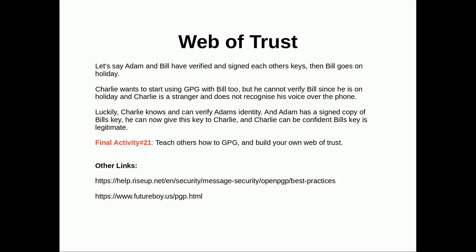Finally, the web of trust. Say you have Adam and Bill — they've verified and signed each other's keys. Bill goes on holiday, so only Adam is around. Charlie wants to start using GPG with Bill too, but can't because Bill is on holiday and Charlie doesn't recognize Bill's voice. Luckily Charlie knows Adam and has already verified Adam's identity. Adam has signed a copy of Bill's key, so he can give that to Charlie — and Charlie never has to meet Bill because Adam already verified Bill, and Charlie already verified Adam. That creates a web of trust.